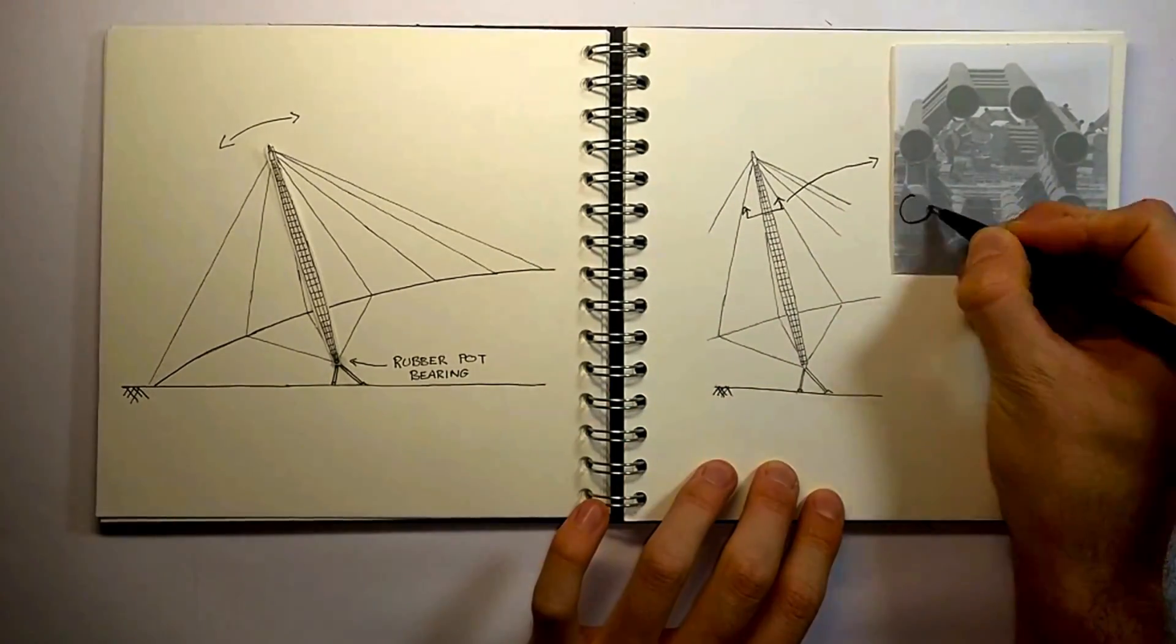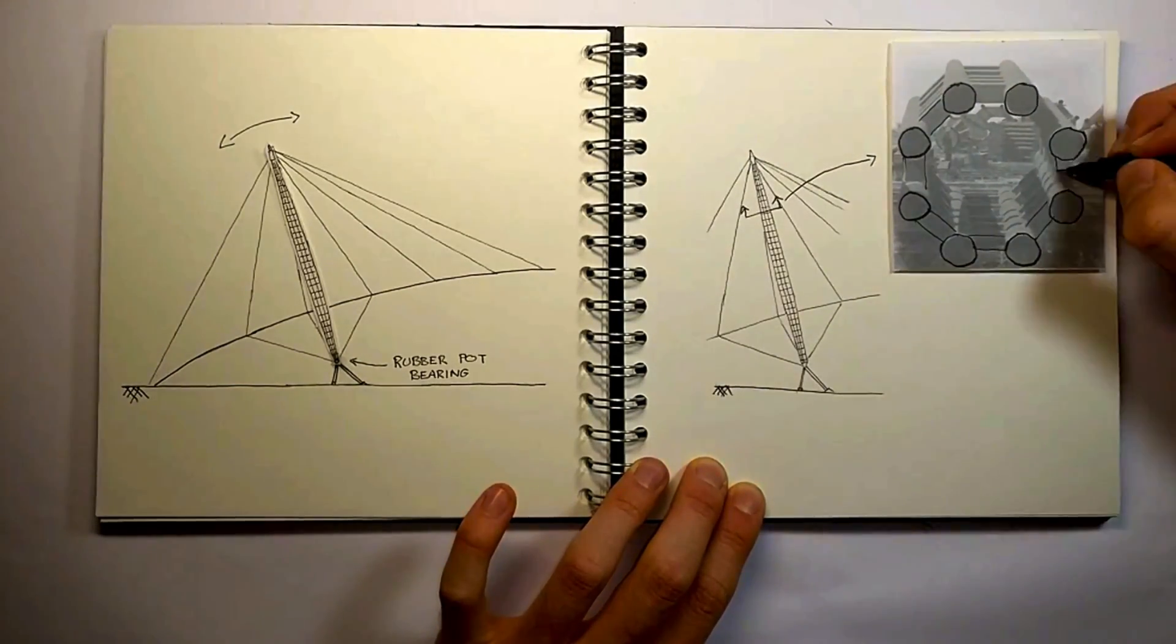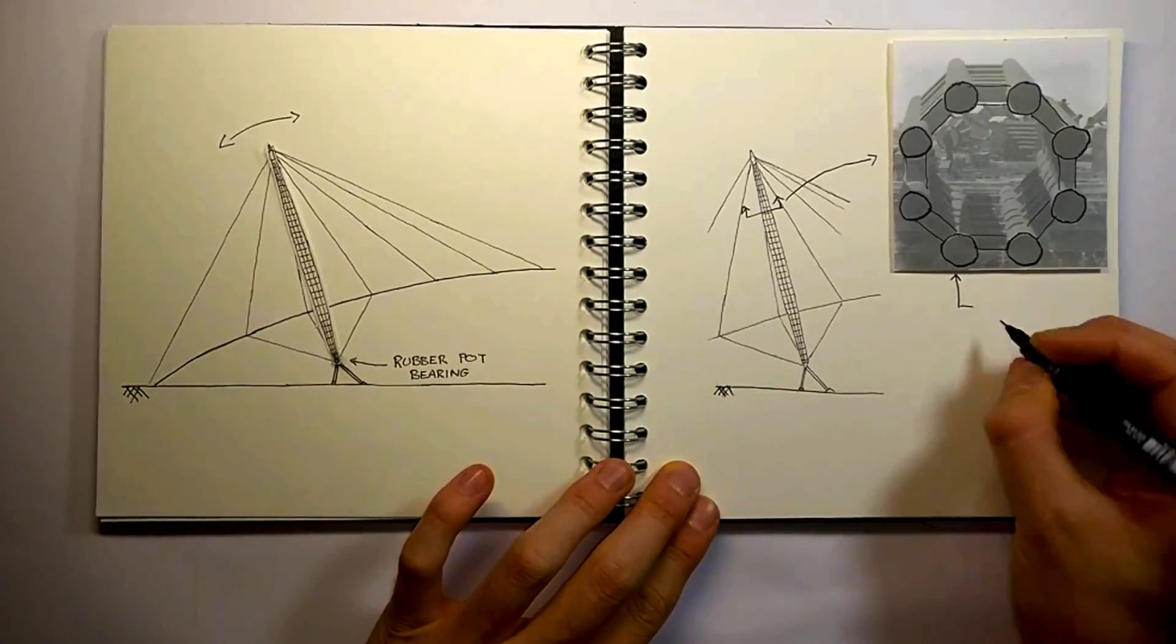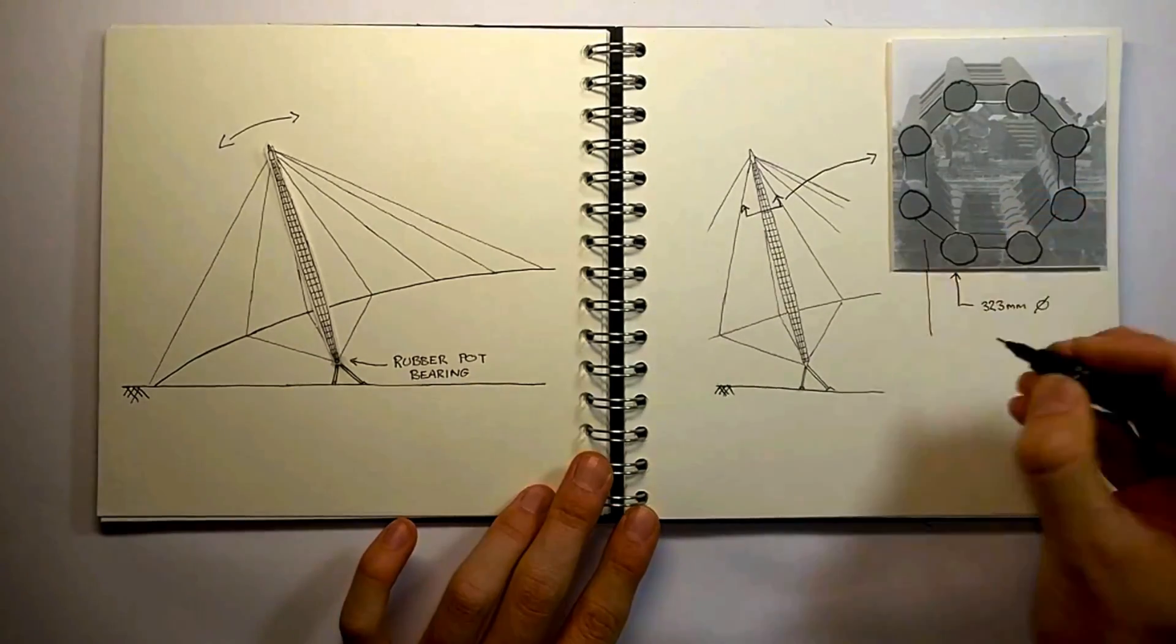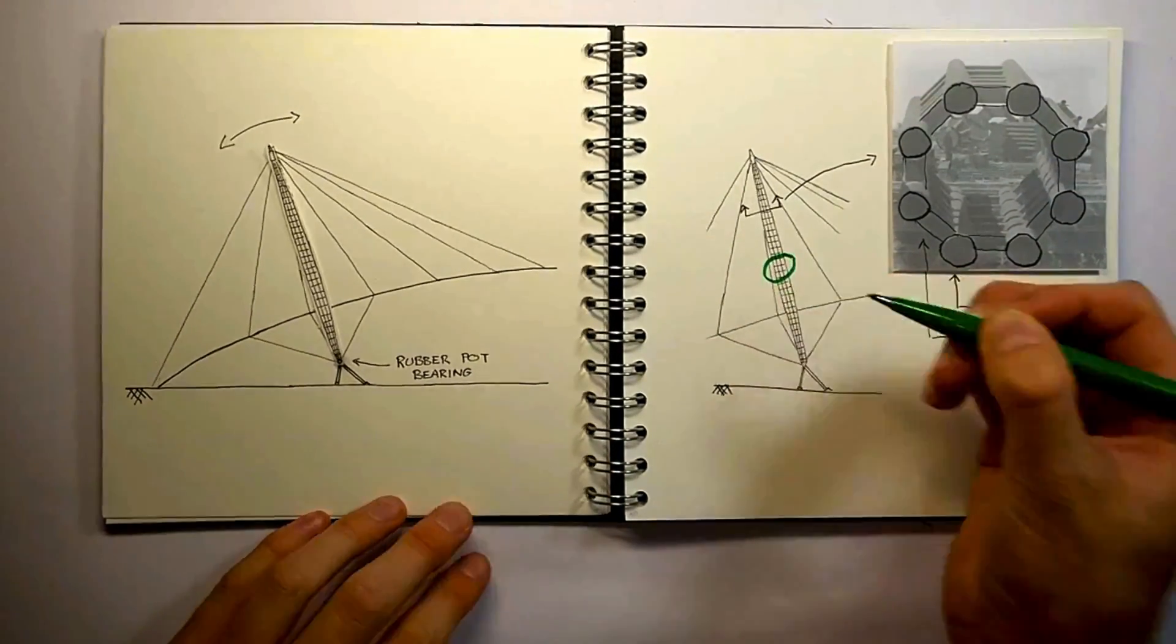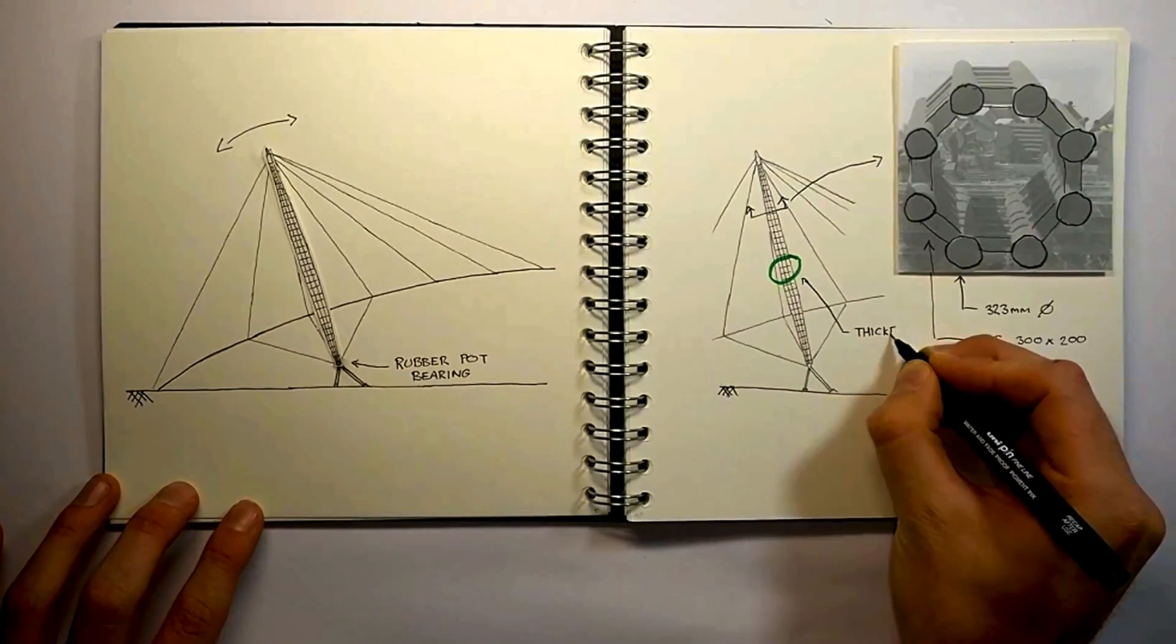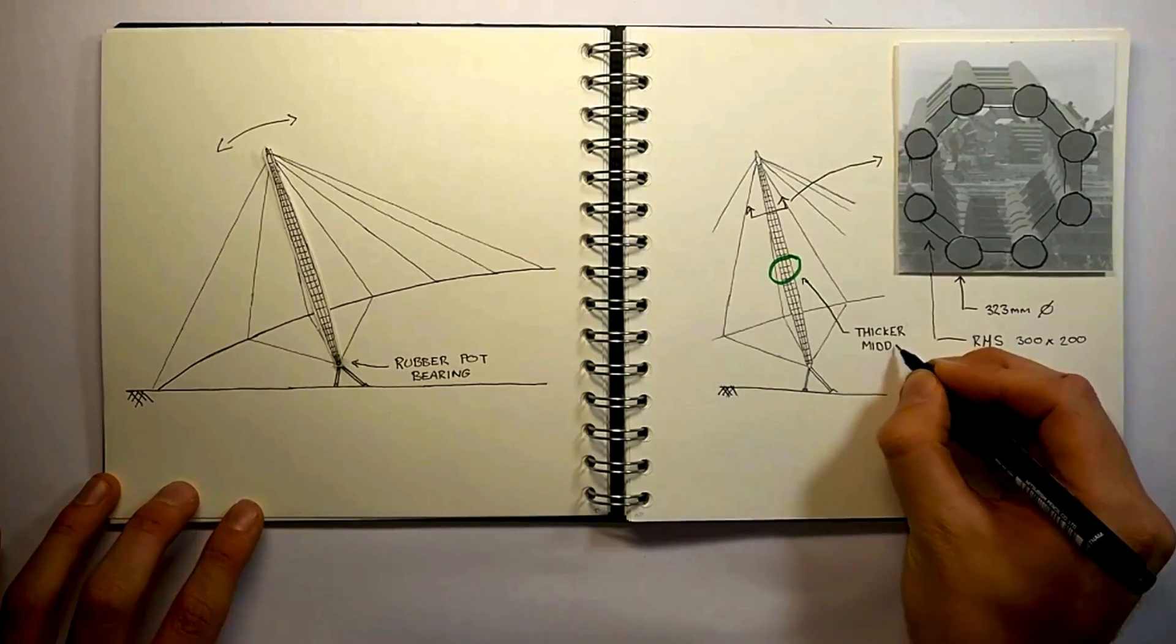By using eight circular hollow sections separated by bracing elements at every two and a half meters, the geometric benefits of a big cross-section were achieved whilst also keeping the weight low. The resistance to buckling was helped further by increasing the overall diameter of the mast in the middle. This is the most likely point to fail during buckling.